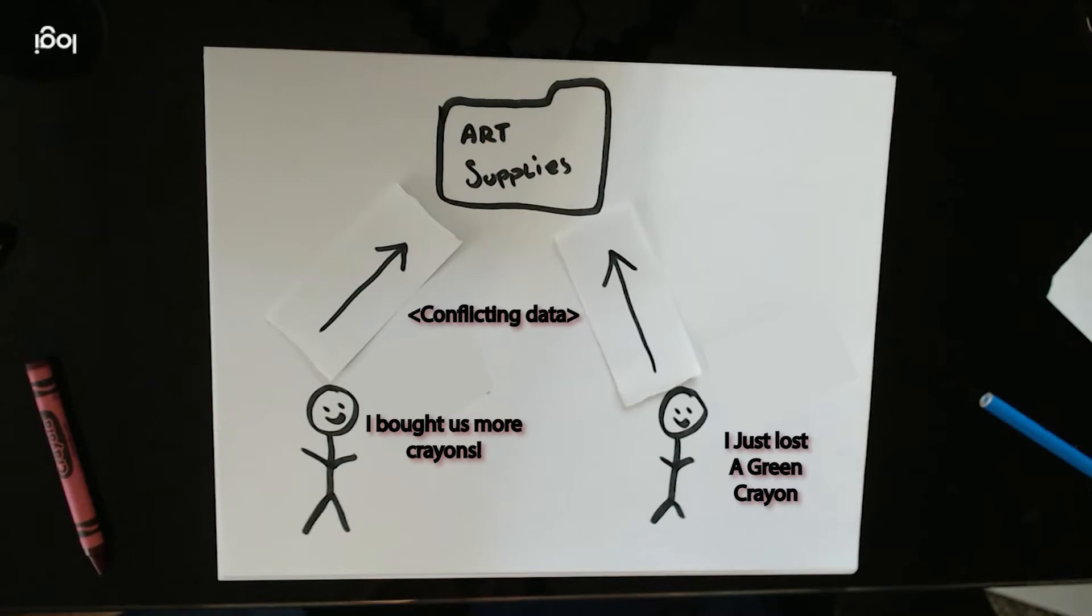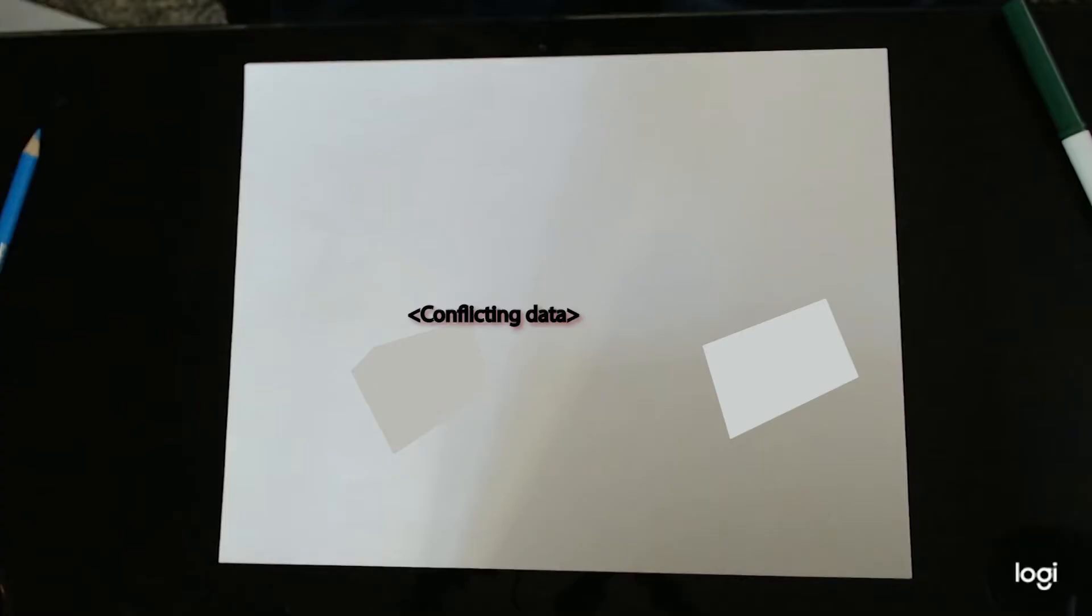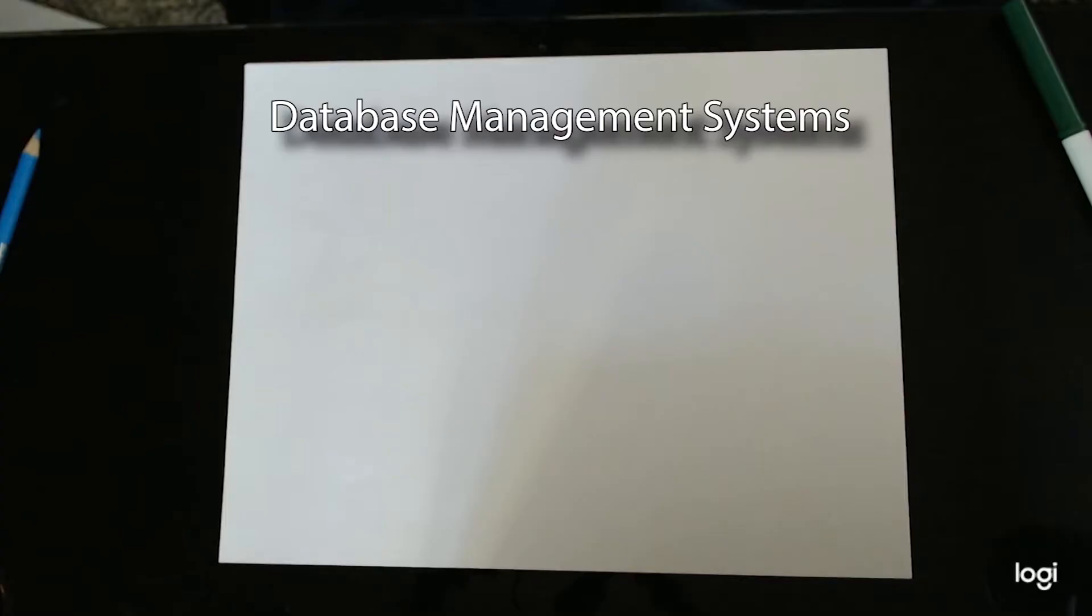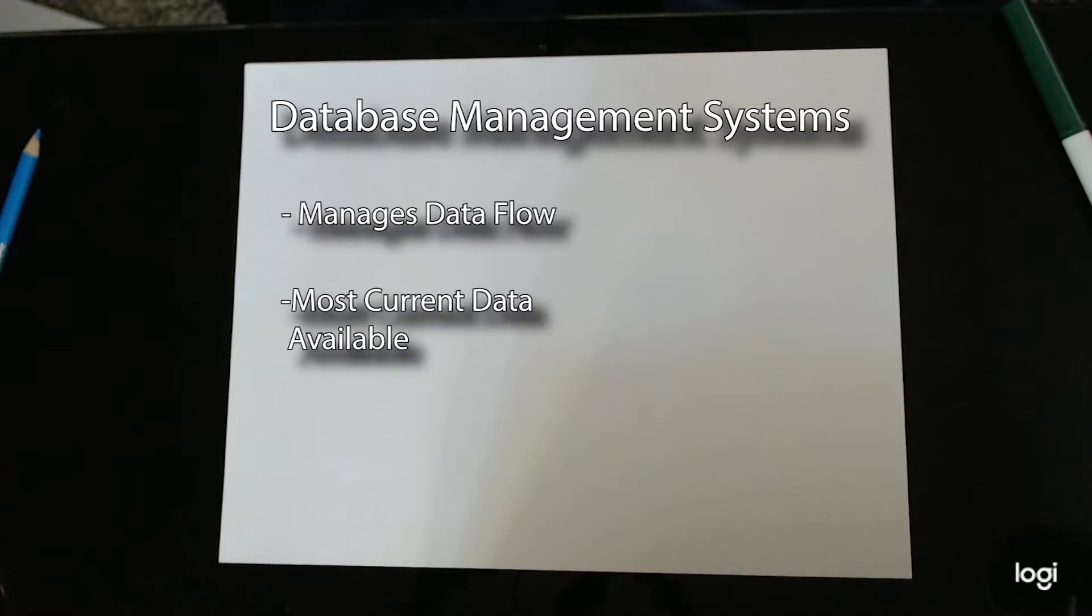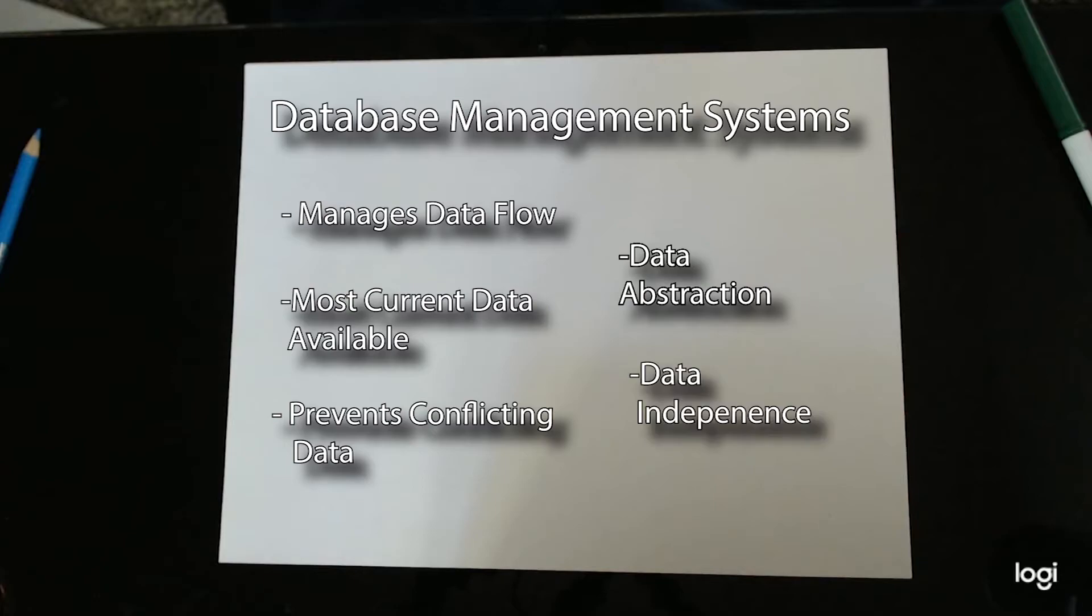This is where a database management system can correct conflicting data. A database management system is a software system that manages the flow of data between users, which allows the most current data to be accessed and prevents confliction by using three layers of data abstraction and allowing for data independence.